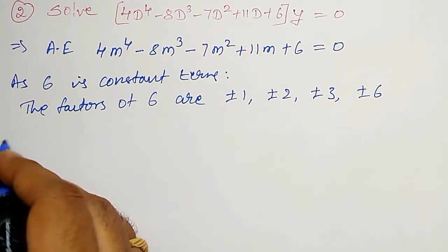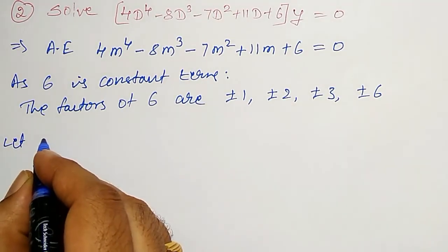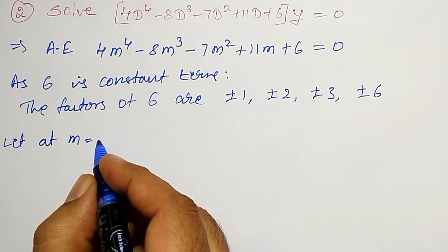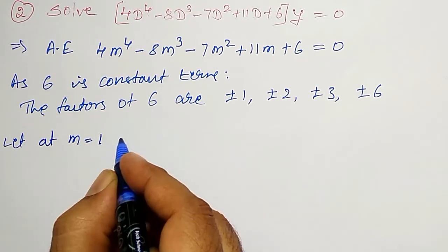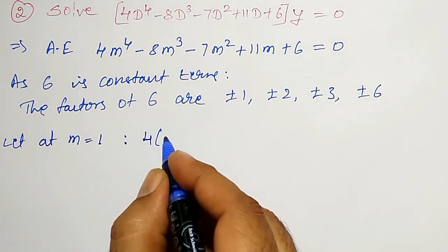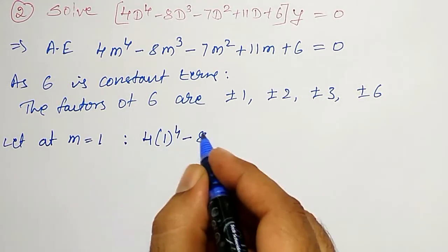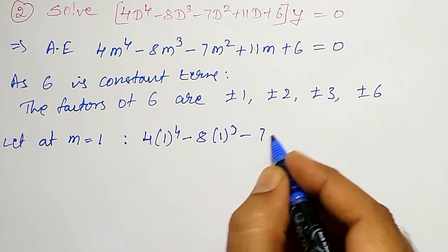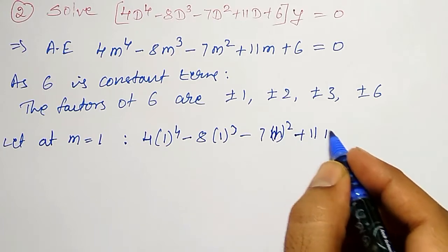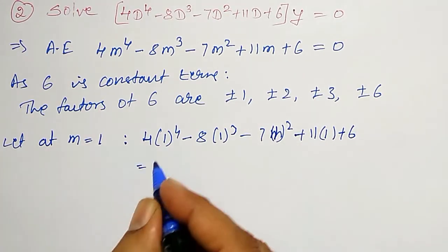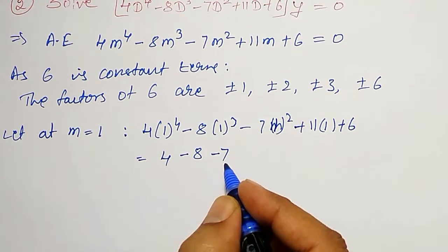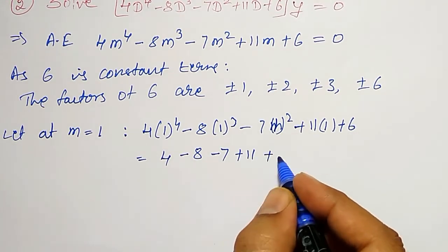Therefore, let at M = +1 first. At M = +1, let me check. Therefore, M = +1: 4(1)^4 - 8(1)^3 - 7(1)^2 + 11(1) + 6. That is nothing but 4 - 8 - 7 + 11 + 6.